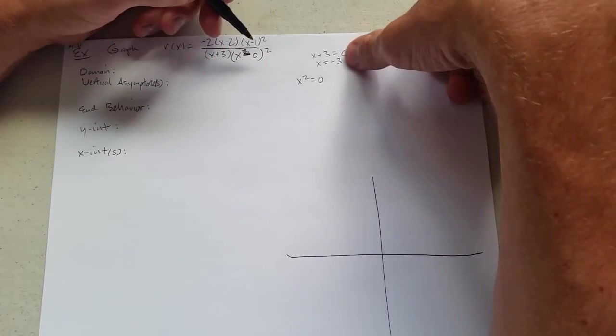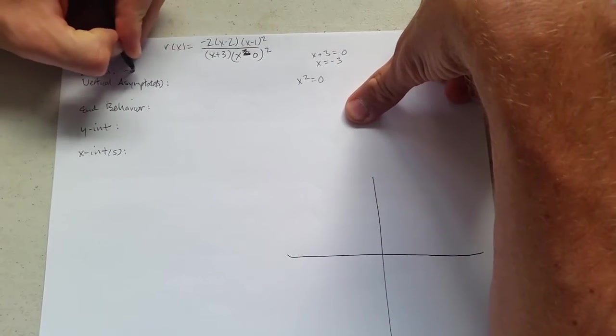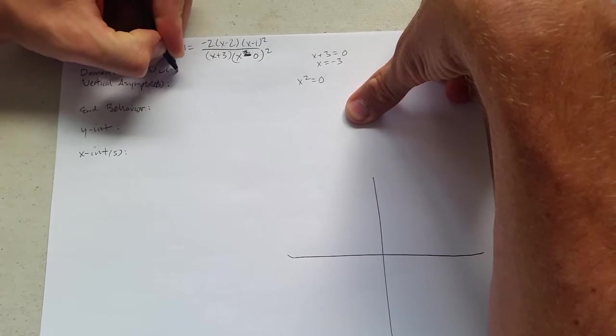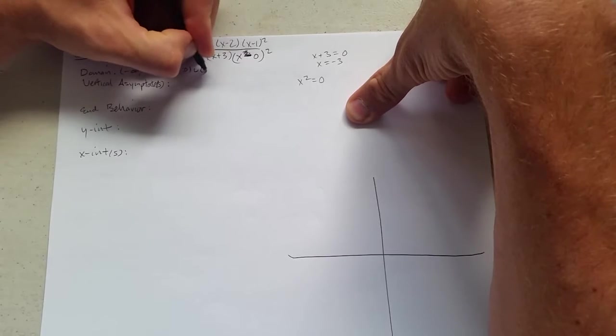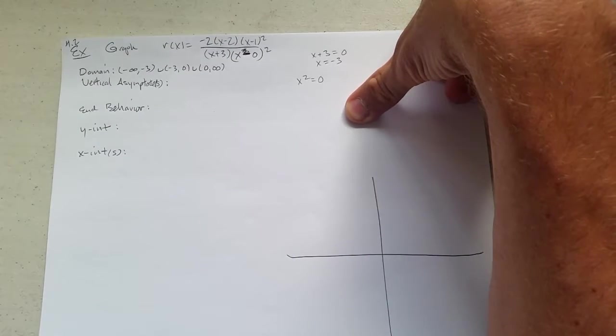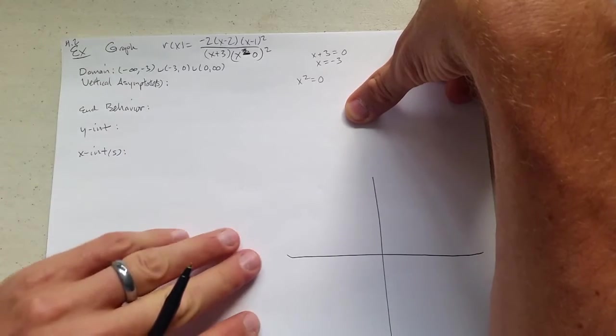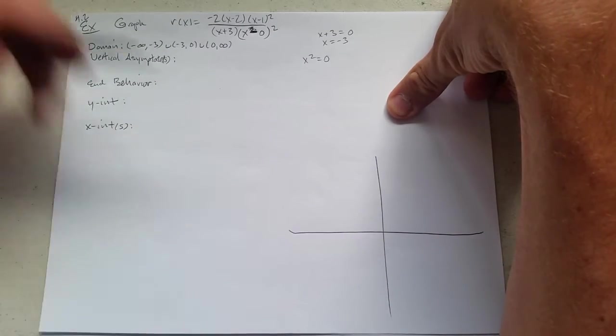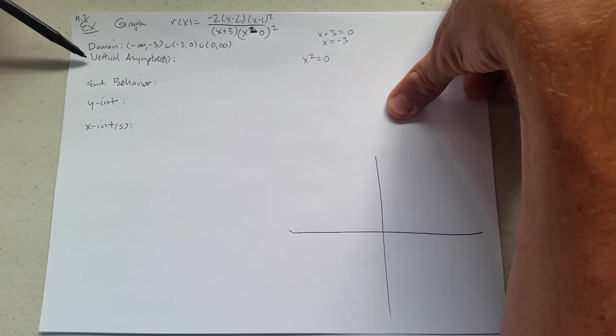I could write real numbers except negative 3 and 0, but we're going to go negative infinity to negative 3, union negative 3 to 0, union 0 to infinity. So this is our domain right here. And you probably answered a question similar to this at some point way back in functions when we talked about introduction of functions.